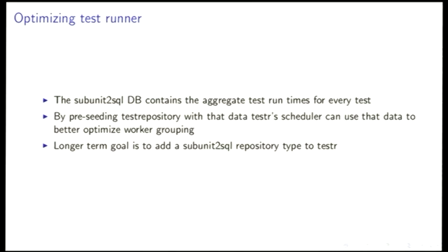The other thing we're starting to use it for as of this morning is optimizing the test runner. We use the test repository testr, which is a test runner that can take previous timing data to make scheduling choices. It groups tests into multiple workers using previous timing data, and since we have this giant repository of all test runs over time, we can use that to extract timing data and populate the scheduler to make more informed decisions and hopefully improve test performance. The long-term goal is to integrate this into the test repository project so everyone can use it without running commands manually outside of it — though it won't work in the OpenStack CI because of permissions issues; we don't want to put credentials on the slaves.